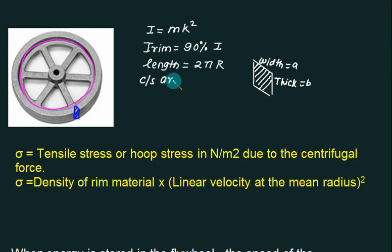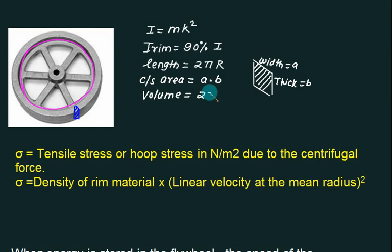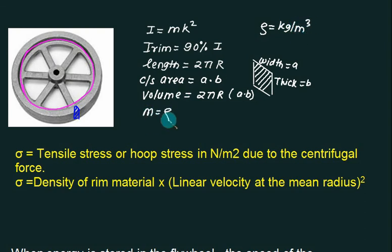The cross-sectional area is A = a × b. Since this area is constant around the rim, multiplying it by the length (circumference) gives the volume: Volume = 2πr × ab. If ρ is the density of the material in kg/m³, then the mass of the rim is: m = ρ × 2πr × ab, in kilograms.